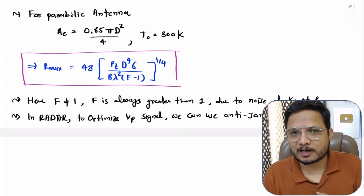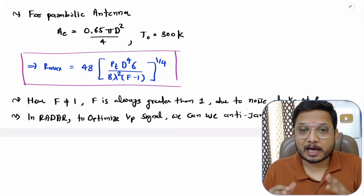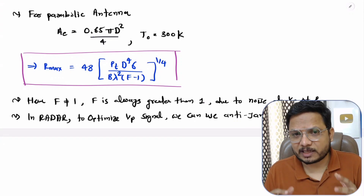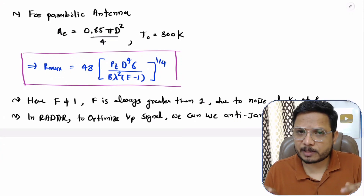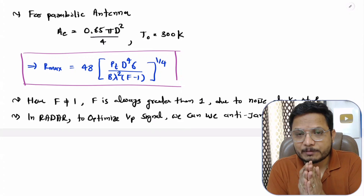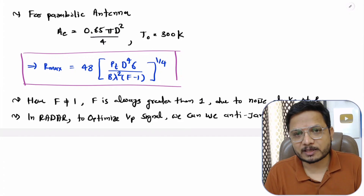This is the basic equation of radar range based on noise figure. In future videos I'll be solving examples based on radar range. I hope you have understood this — if you have anything to share please note it in the comment section. Thank you so much for watching this video.